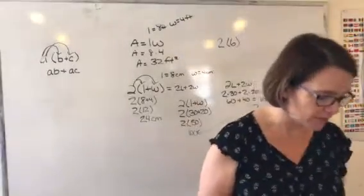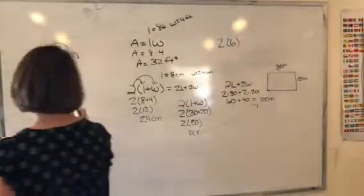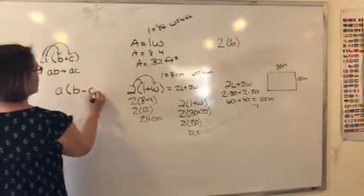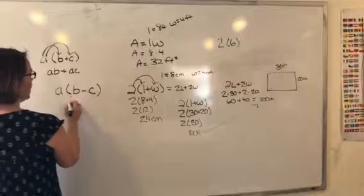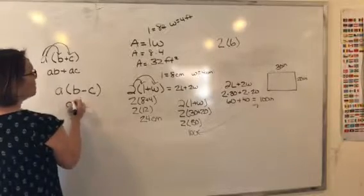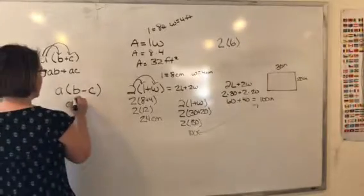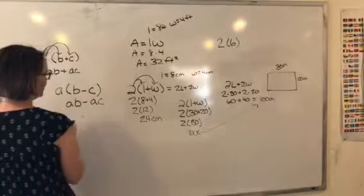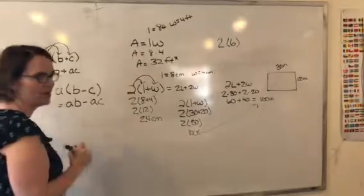It also applies over subtraction. So I could say A times B minus C. So A times B is AB minus A times C? AC. Very good.